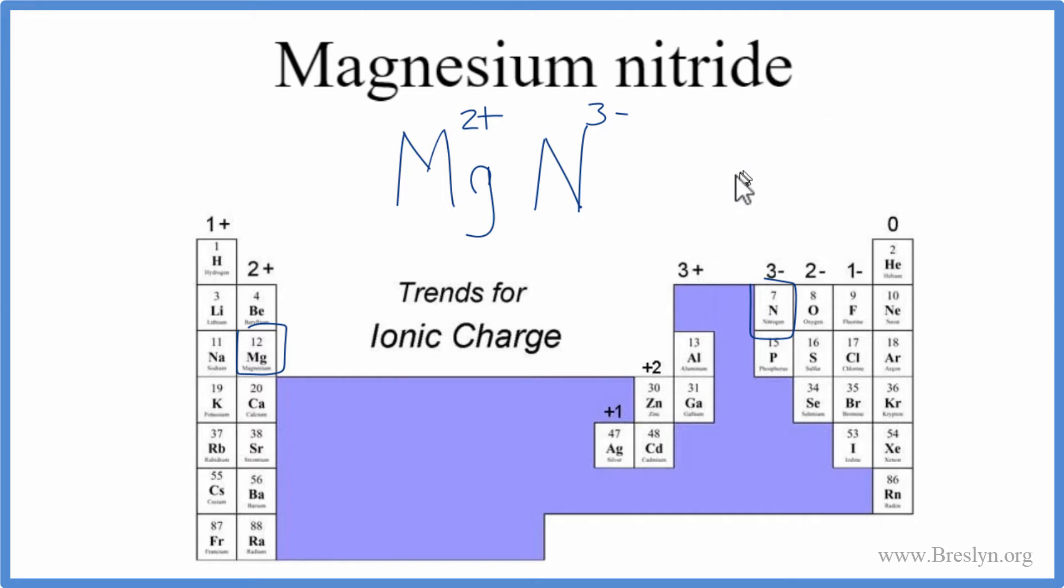So to do that, we're going to use a bit of a trick. We're going to take the two here, this is called the crisscross method, so we'll move the two here, and the three here. Then we'll get rid of the charges.